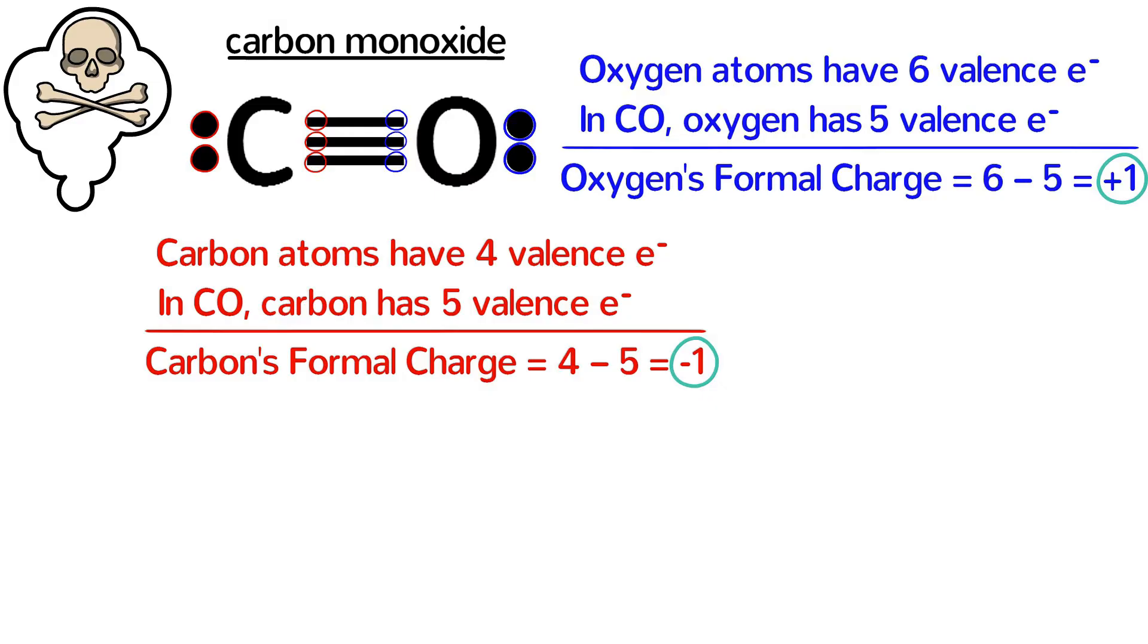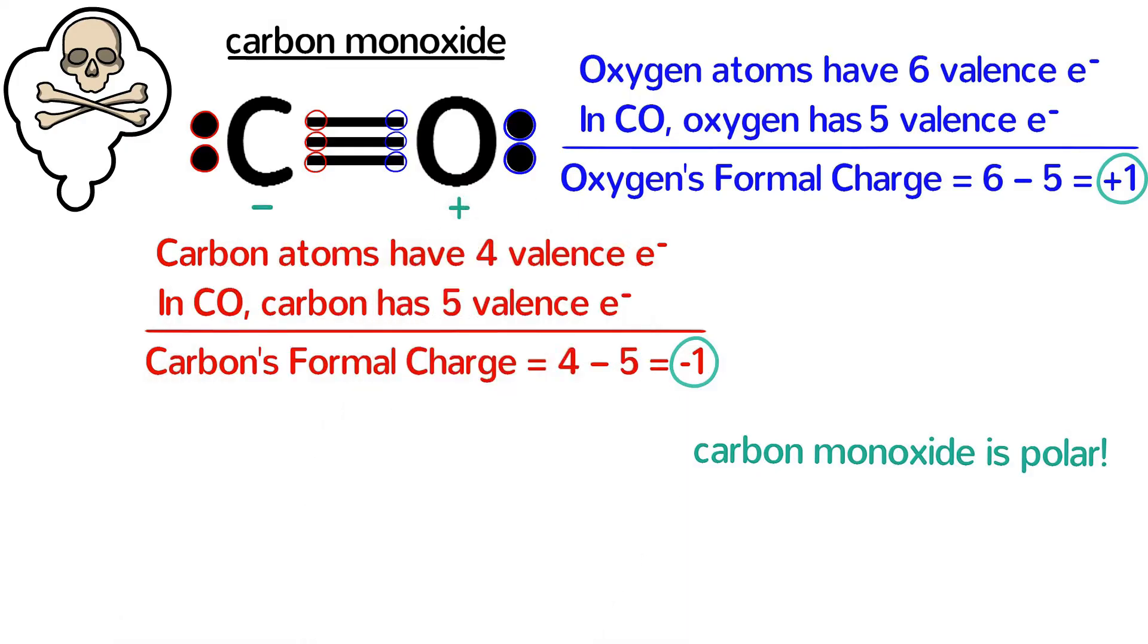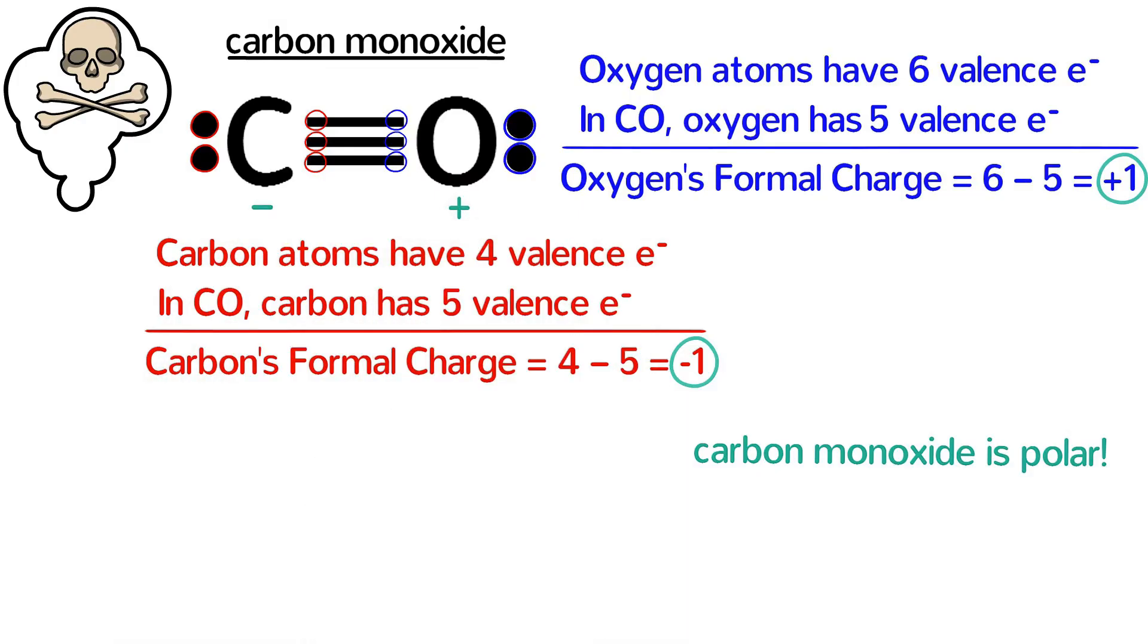These formal charges tell us that carbon monoxide is a polar molecule with carbon as the negative end and oxygen as the positive end, even though oxygen is more electronegative than carbon. In fact, because the formal charges and electronegativities have opposite polarities,